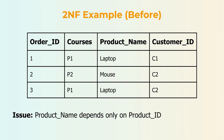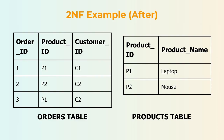Let's look at an example before applying 2NF. Here, we have an orders table with order ID, product ID, product name, and customer ID. The issue is that product name only depends on the product ID and not the whole order ID. This means there's a partial dependency, because product name is tied to just part of the key and not the entire key. This can lead to errors or redundant data. After applying 2NF, we split the table into two. One table is for the orders, which has order ID, product ID, and customer ID. The second table is for products, with product ID and product name. Now, there are no partial dependencies, because each piece of information depends on the entire key in its own table. This makes the data cleaner and more flexible, ensuring each bit of data is correctly related.